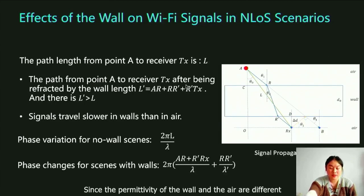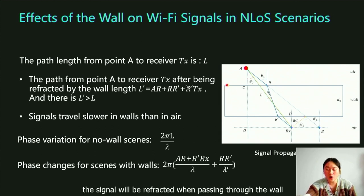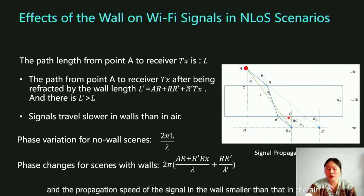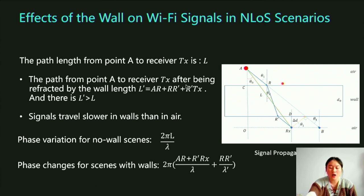Since the permittivity of the wall and the air are different, the signal will be refracted when passing through the wall, and the propagation speed of the signal in the wall is smaller than that in the air. So the phase of the signal changes.